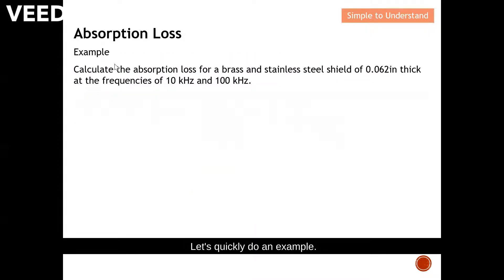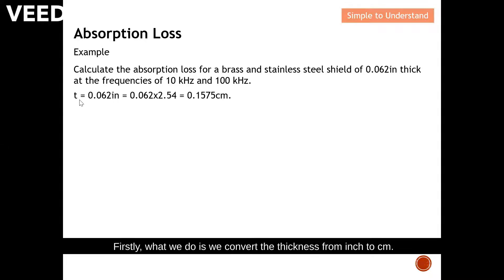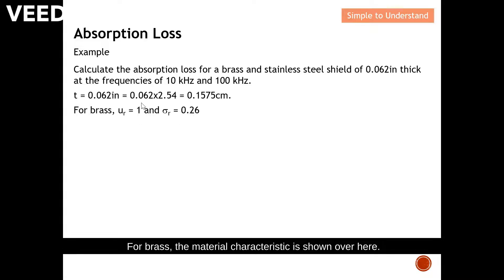Let's calculate the absorption loss for brass and also stainless steel with a thickness of 0.062 inch at frequencies of 10 kHz and 100 kHz. First, we convert the thickness from inch to centimeter. The material characteristics for brass are shown here.